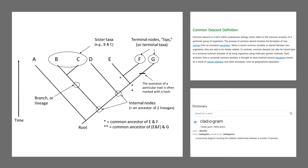In contrast, common descent can also be traced back to a universal common ancestor of all living organisms using molecular genetic methods. Such evolution from a universal common ancestor is thought to have involved several speciation events as a result of natural selection and other processes such as geographical separation. Those natural selection shifts that we've discussed and learned about in previous videos, should those curves or shifts keep going on further and further away, that eventually is how you get new species through that natural selection aspect.